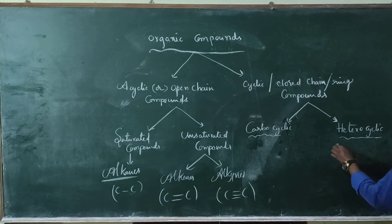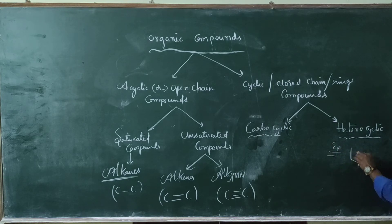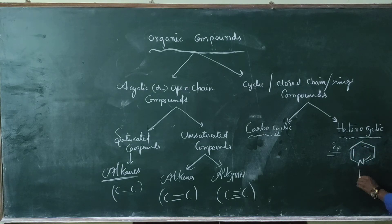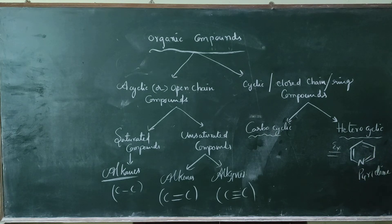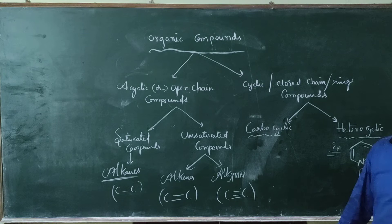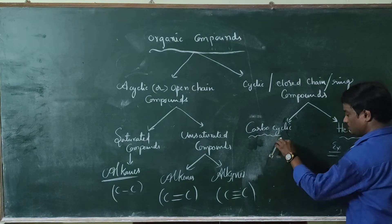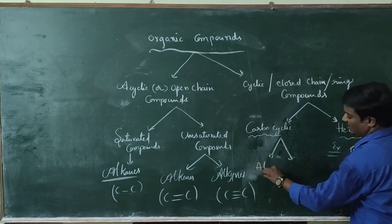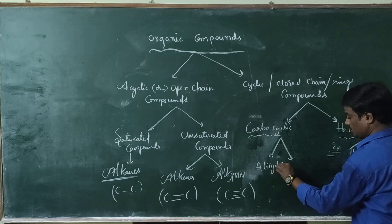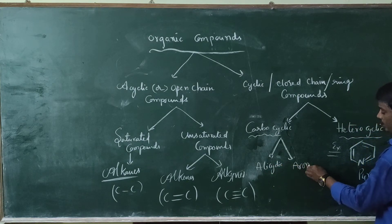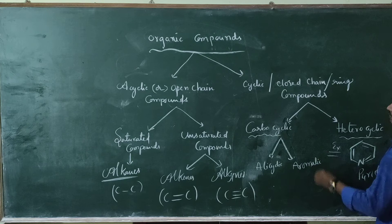For example, in a heterocyclic compound, one atom in the ring is nitrogen instead of carbon. An example of this is pyridine. Carbocyclic compounds are further divided into two types: alicyclic compounds and aromatic compounds.